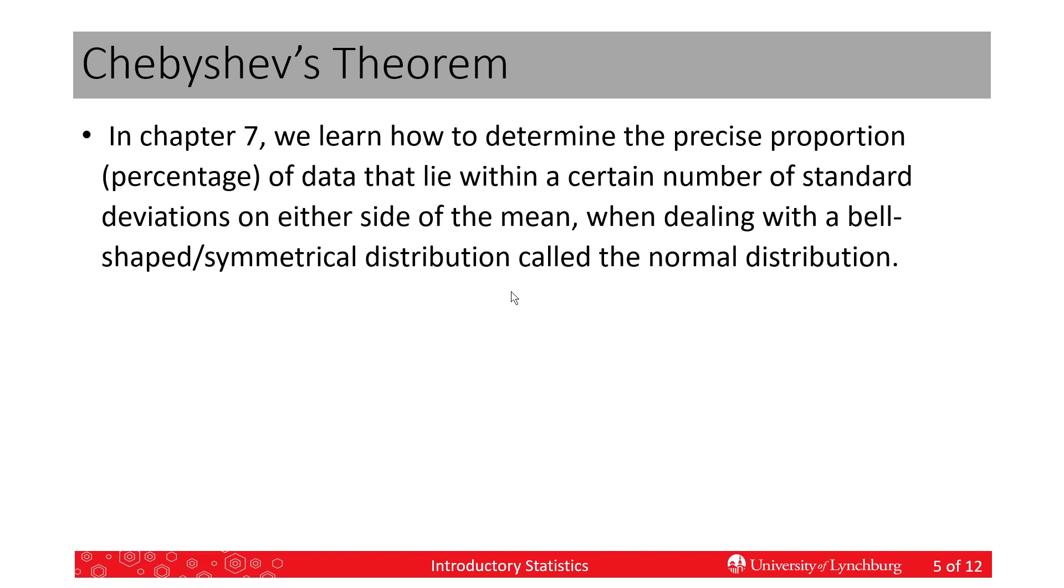So in the future, in Chapter 7, we're going to learn how to get the precise or exact proportion or percentage of the data that lie within a certain number of standard deviations on either side of the mean. But that's only for a bell-shaped distribution that's symmetrical, called the normal distribution.